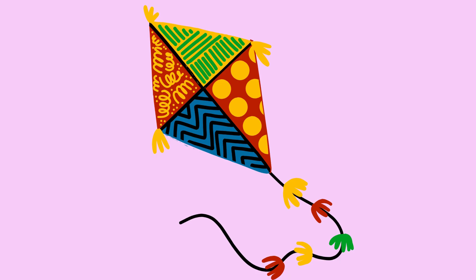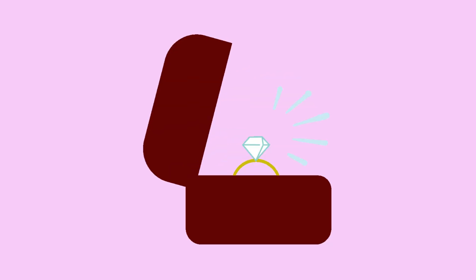Diamond. Kite is in diamond shape. Ring is in diamond shape.